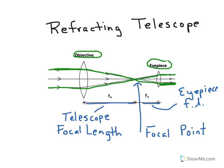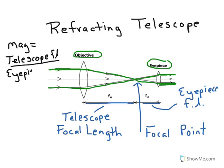The telescope magnification is going to be the ratio of these two. So it's going to be the telescope focal length divided by the eyepiece focal length.